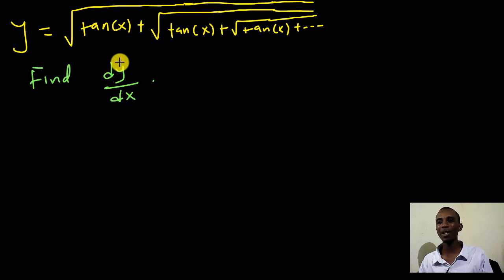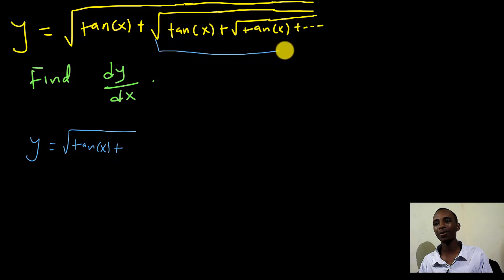So let's begin by writing this function in another way. I'll write this as y equals the square root of tan x plus... As you can see, if I look at all this tan x plus tan x plus tan x up to infinity, I actually have another y. So I could write this as y squared equals tan of x plus y. I've just squared both sides.